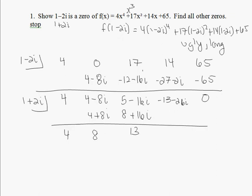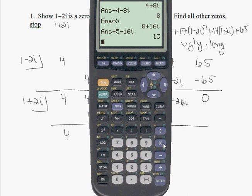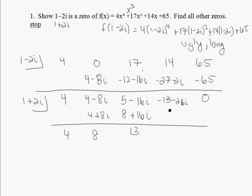I do 13 times 1 plus 2i, so 13 times x is 13 plus 26i. And voila, we got 0. So now I have 4x squared plus 8x plus 13 is equal to 0.